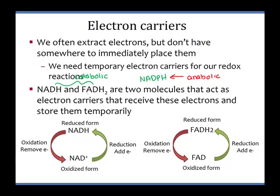NADH and FADH2 are big, long chemical names — these are two molecules that act as our electron carriers. They receive the electrons we rip away from food molecules and store them temporarily. NADH has the H, meaning it has a hydrogen added — it's been reduced. We've added electrons to it. Once we use those electrons, we oxidize NADH and turn it into NAD+. NAD+ is plus because we've taken away its electron. NAD+ is the oxidized form and NADH is the reduced form.